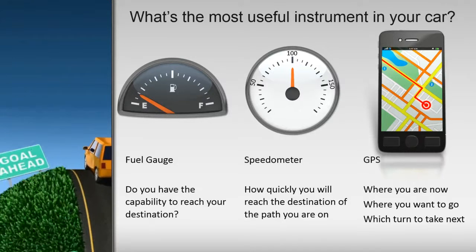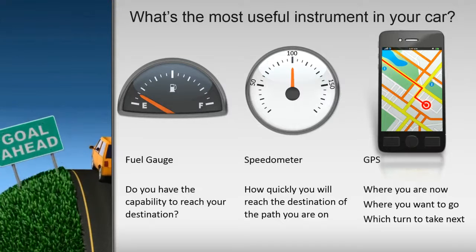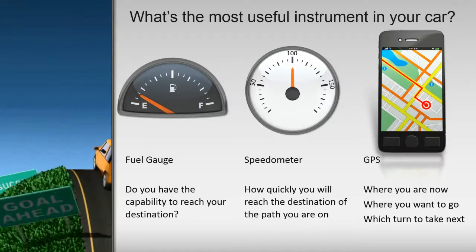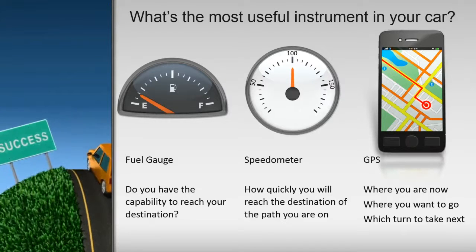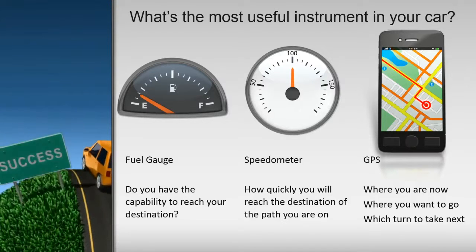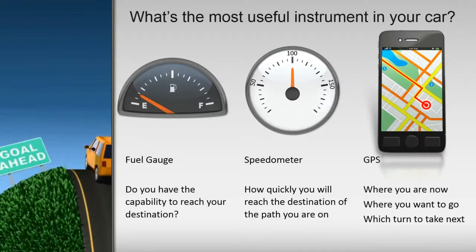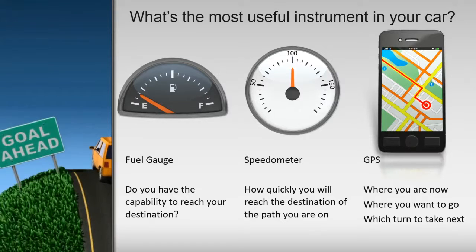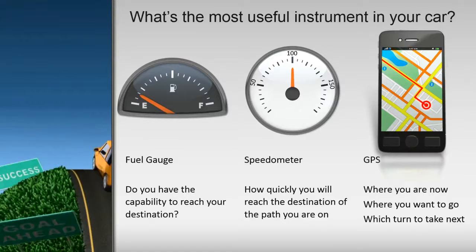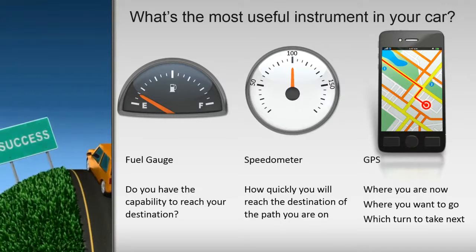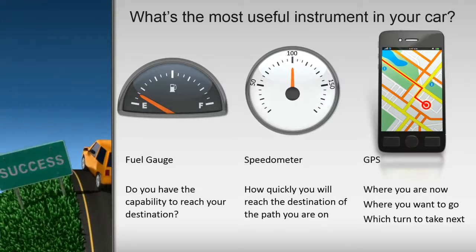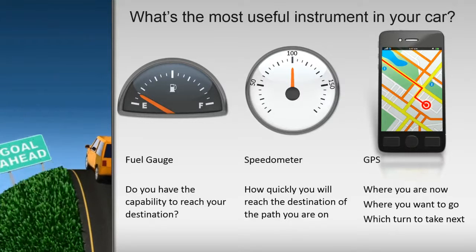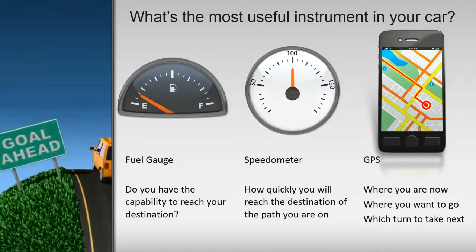Now, you can of course do this manually — get out a map, a compass, calculate your speed, check for landmarks, make your own adjustments, and so long as you can read a map, reach your intended destination. But isn't a GPS a lot easier?